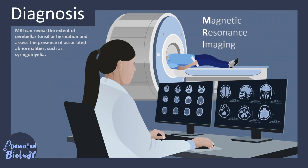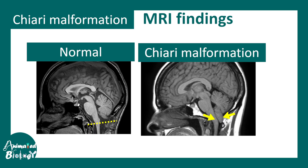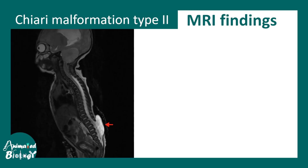Diagnosis can be done using magnetic resonance imaging. MRI can reveal the extent of cerebellar tonsil descent or herniation through the spinal canal. This is an MRI finding — you can see that in Chiari malformation the cerebellar tonsil has descended down, and it is clearly visible on a sagittal section.